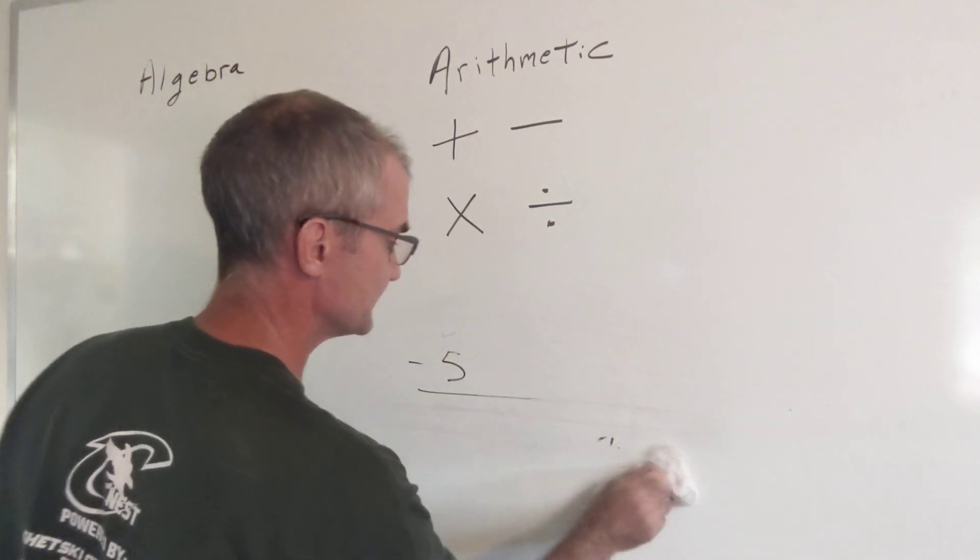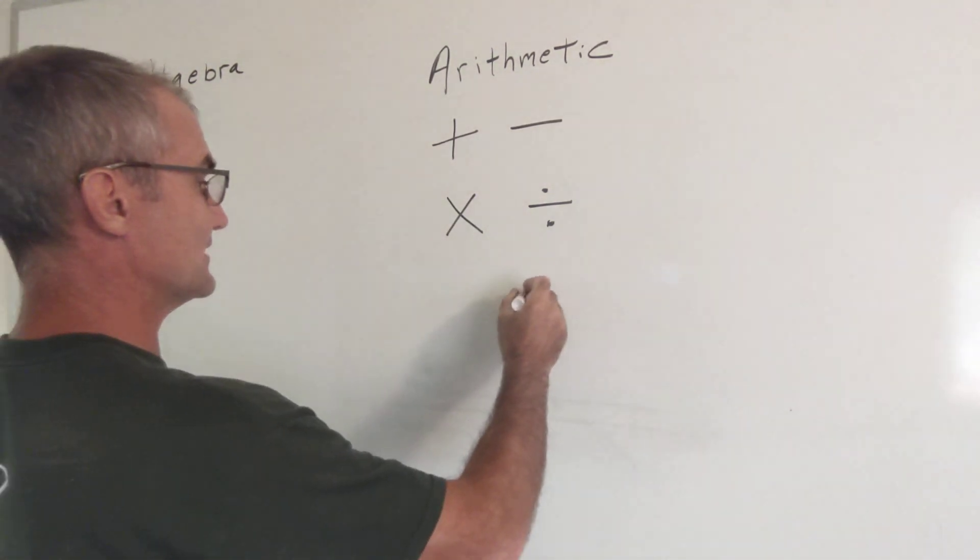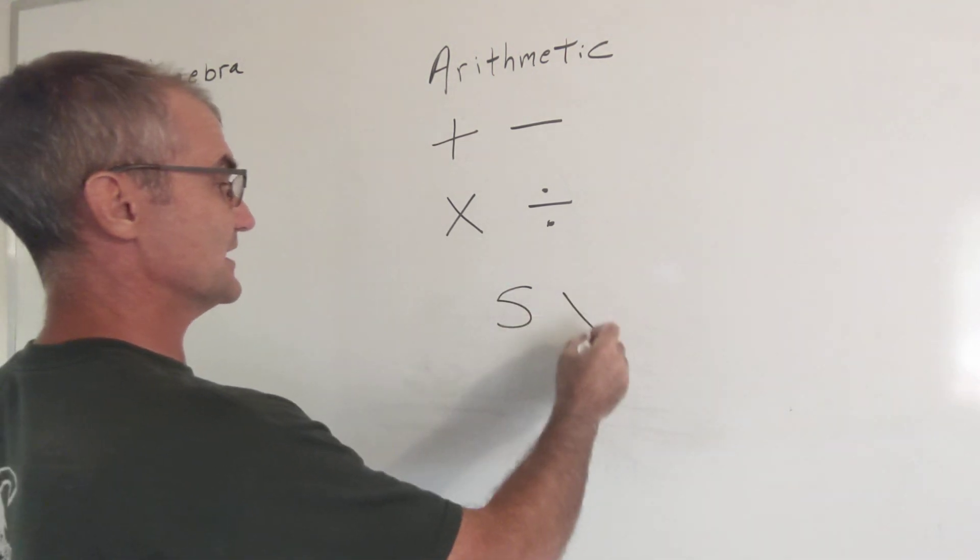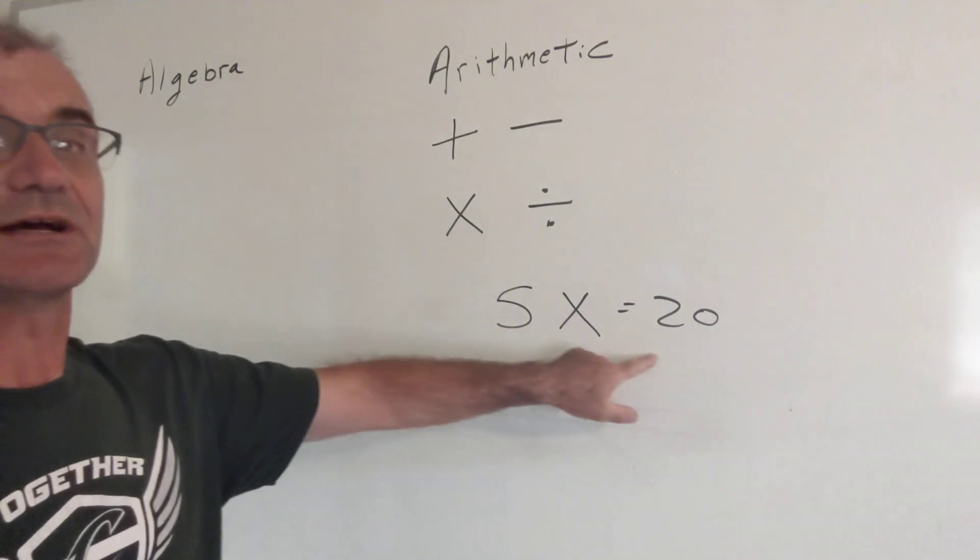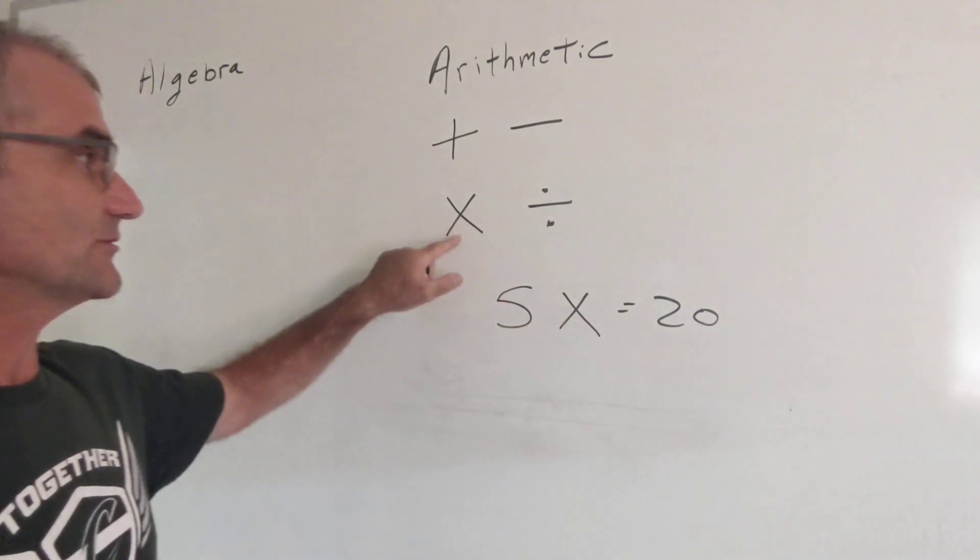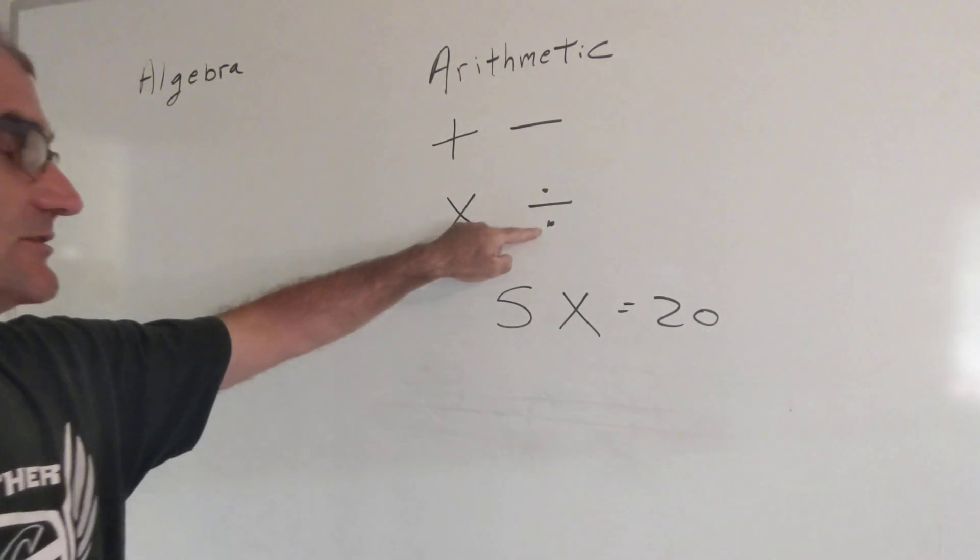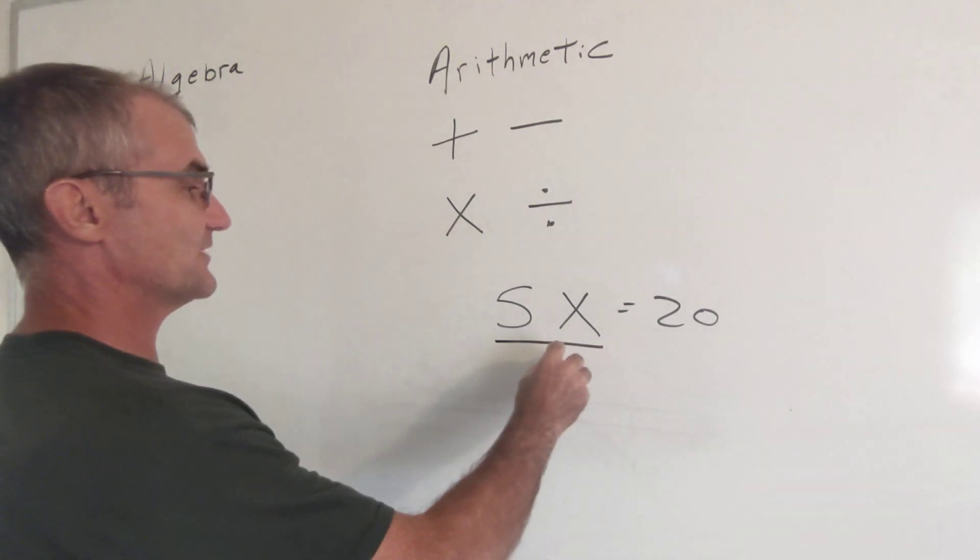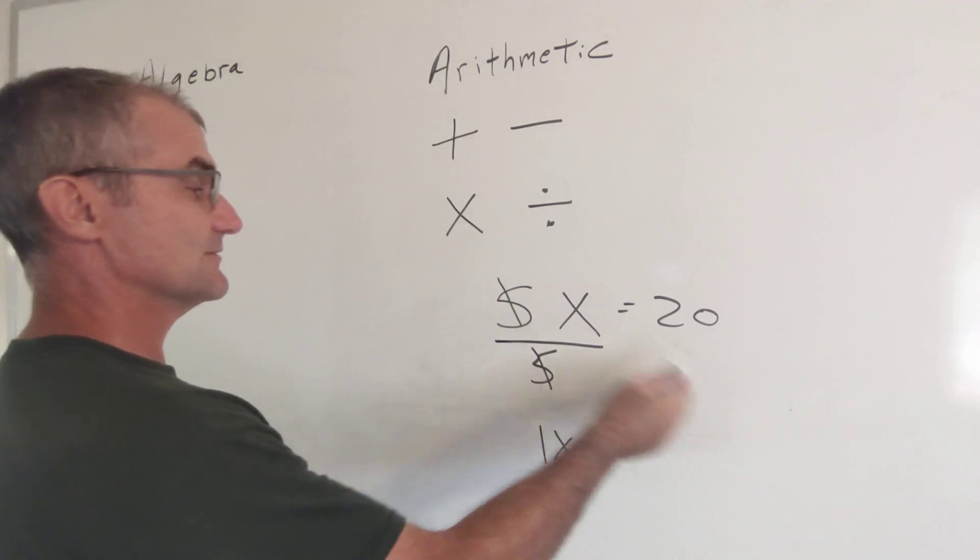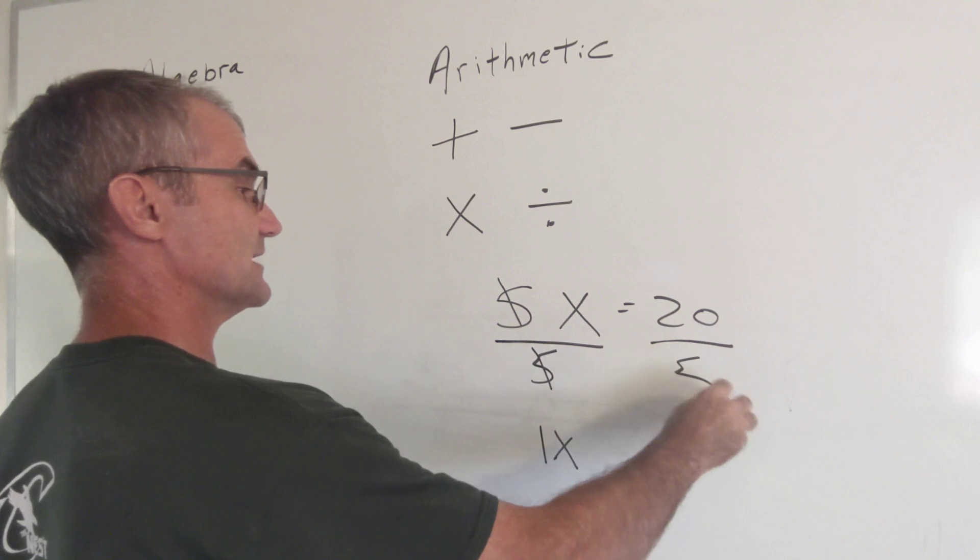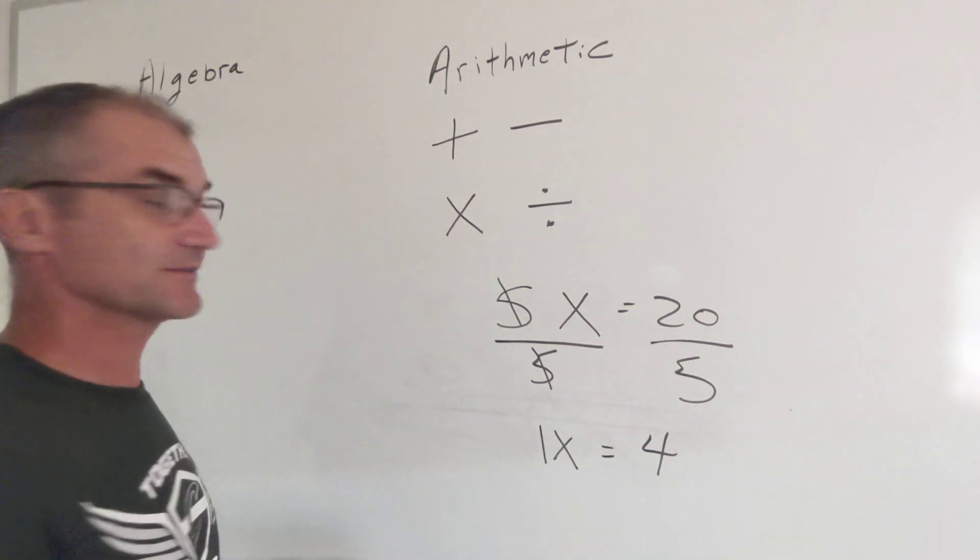So let's do some more algebra. Let's say now instead I have 5 times x equals 20. This is saying 5 times what is equal to 20? Well the reverse operations of multiplication is division. So I could divide both sides by 5. 5 divided by 5 is equal to 1. So I have 1x. If I do that to the left side, I do it to the right side. 20 divided by 5 is 4 and x is equal to 4.